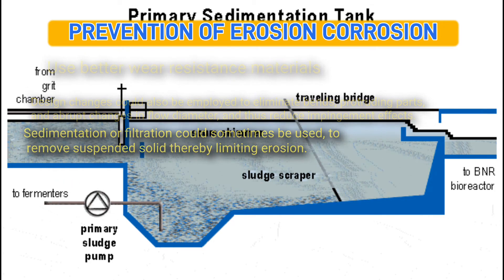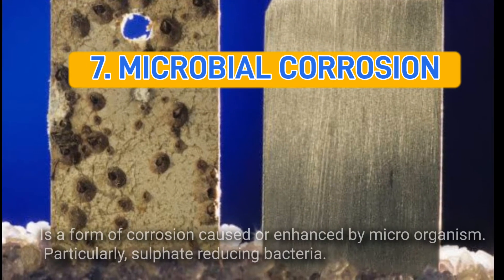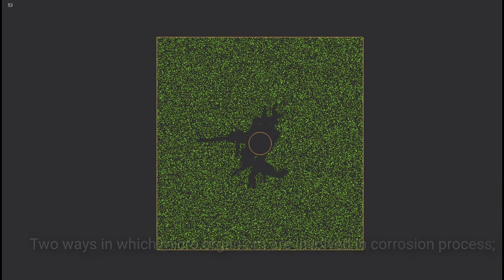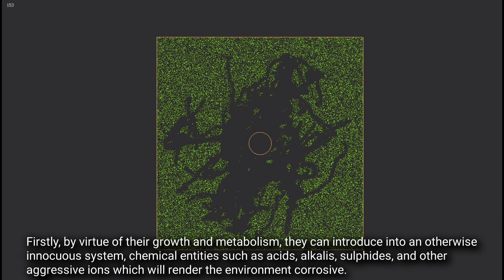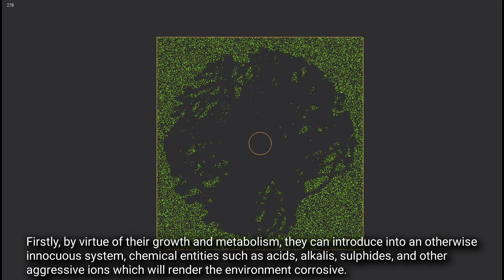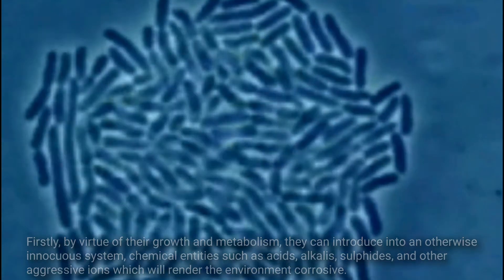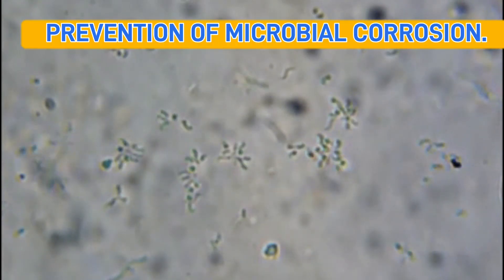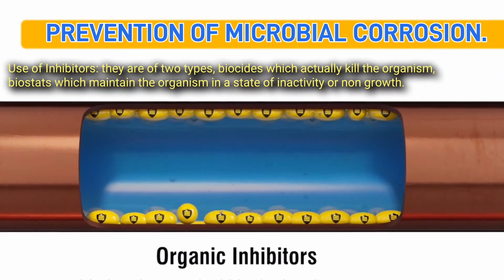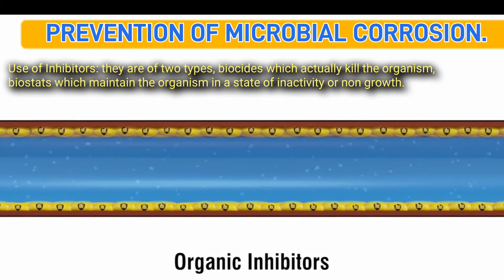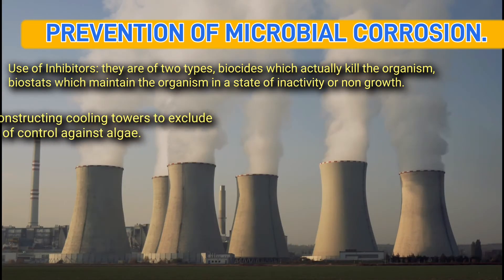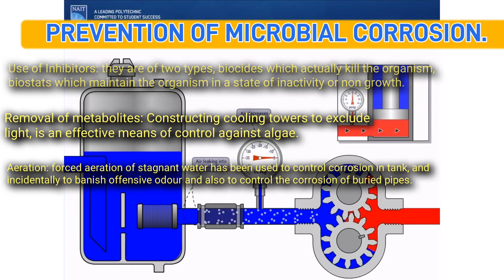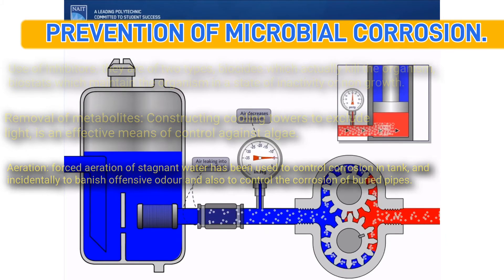Seven, microbial corrosion: a form of corrosion caused or enhanced by microorganisms, particularly sulfate-reducing bacteria. Microorganisms are involved in two ways: firstly, through their growth and metabolism they can introduce chemical entities such as acids, alkalis, sulfides, and other aggressive ions into an otherwise innocuous system, rendering the environment corrosive. Prevention includes use of inhibitors — biocides, which kill the organism, and biostats, which maintain organisms in a state of inactivity — removal of metabolites, constructing cooling towers to exclude light to control algae, and forced aeration of stagnant water to control corrosion in tanks and buried pipes.